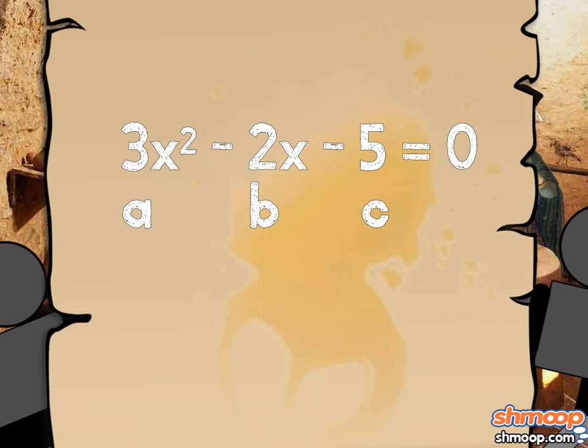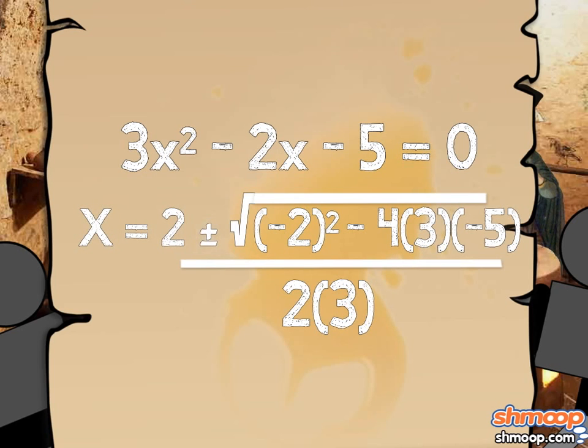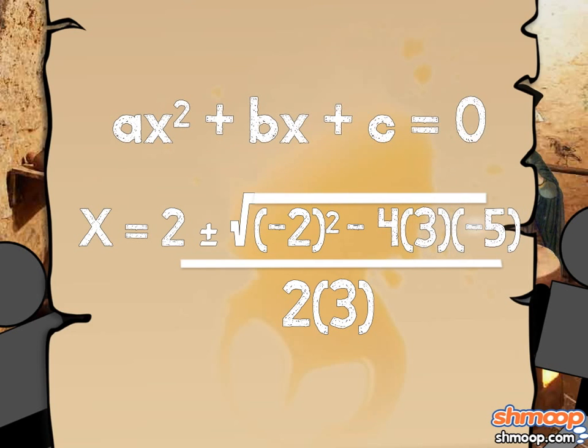So plugging this into the quadratic equation, we have x equals 2 plus or minus the square root of negative 2 squared minus 4 times 3 times negative 5, all this over 2 times 3.